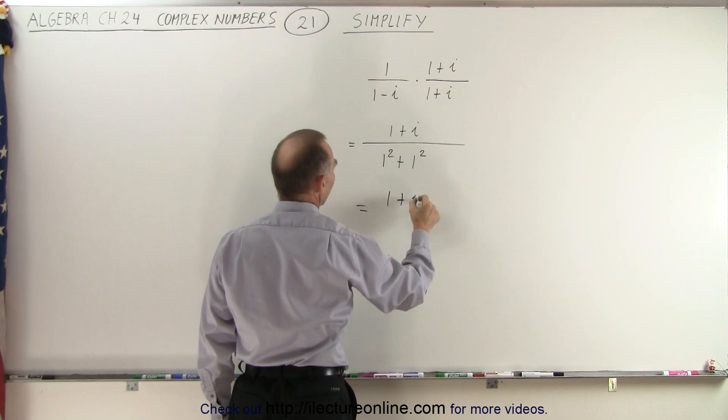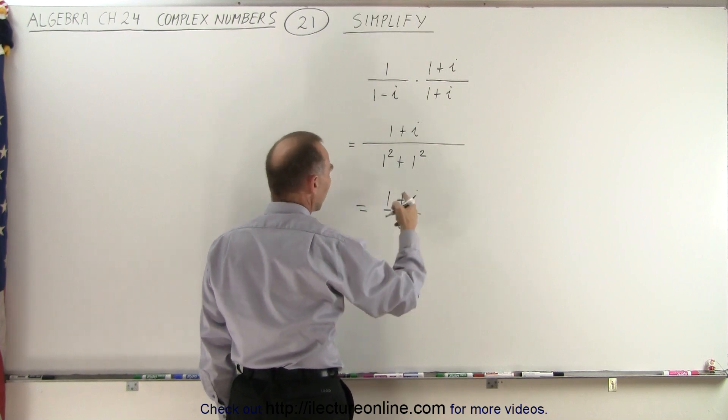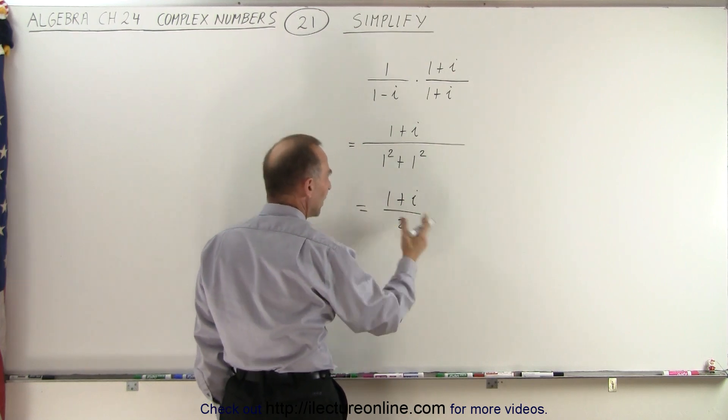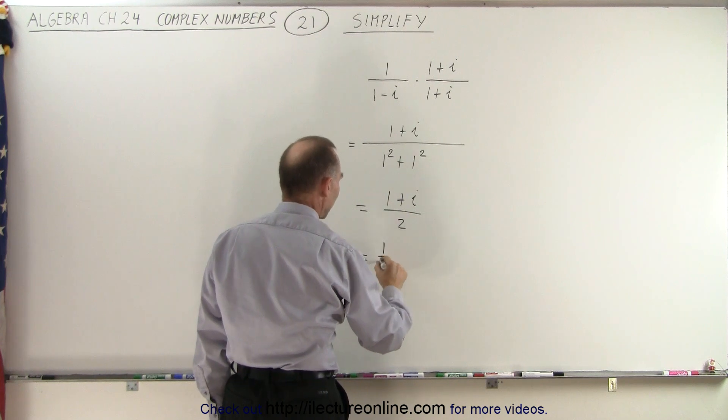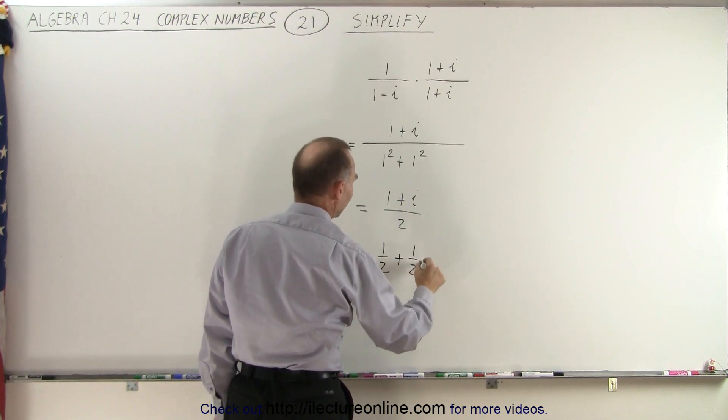So this is equal to 1 plus i divided by 2. And then we can write it as a real part and an imaginary part, which is equal to 1 half plus 1 half times i.